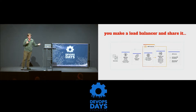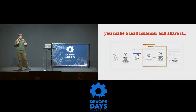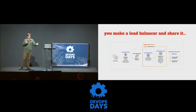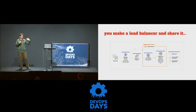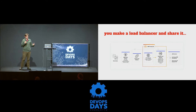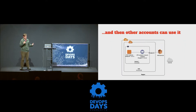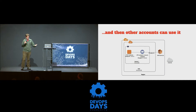What this means for PrivateLink specifically is that a source can connect to a destination, but the destination network can't reach into the source and do anything or inspect anything. All it knows about is this one thing that you've given it to connect to. So it's a great option for service providers. The way that it works is that you, in your account, create what's called a service using a specific type of Amazon load balancer. When you do that, you share that with other AWS accounts. Those AWS accounts then can make what are called endpoints from them.